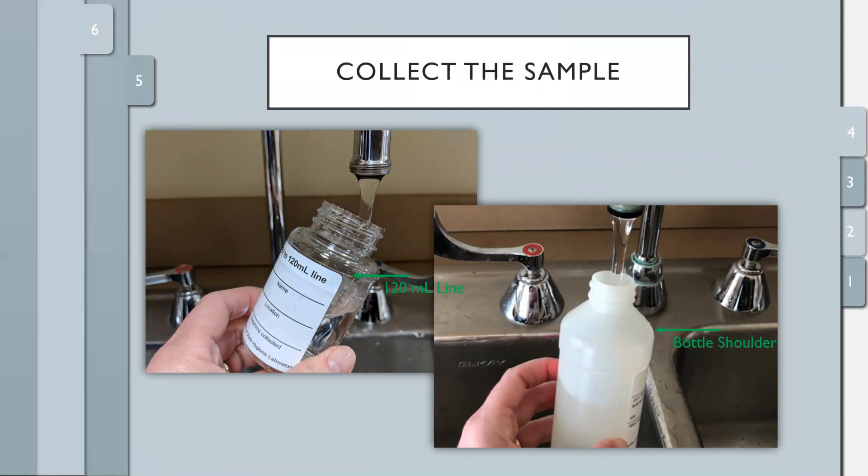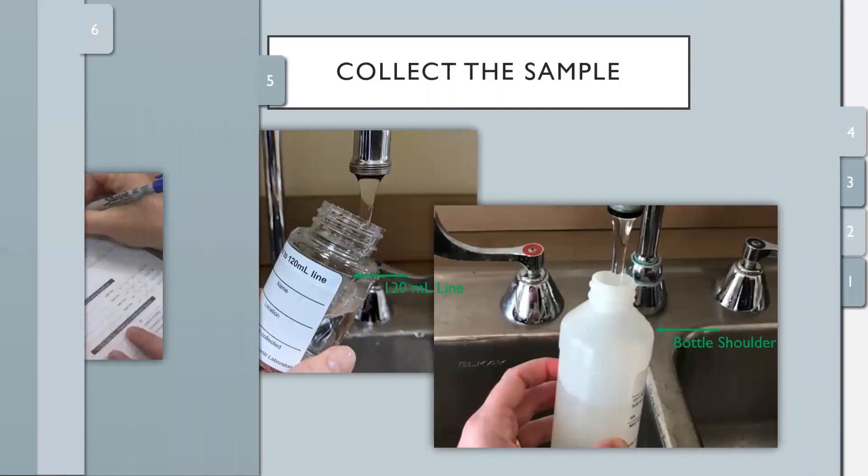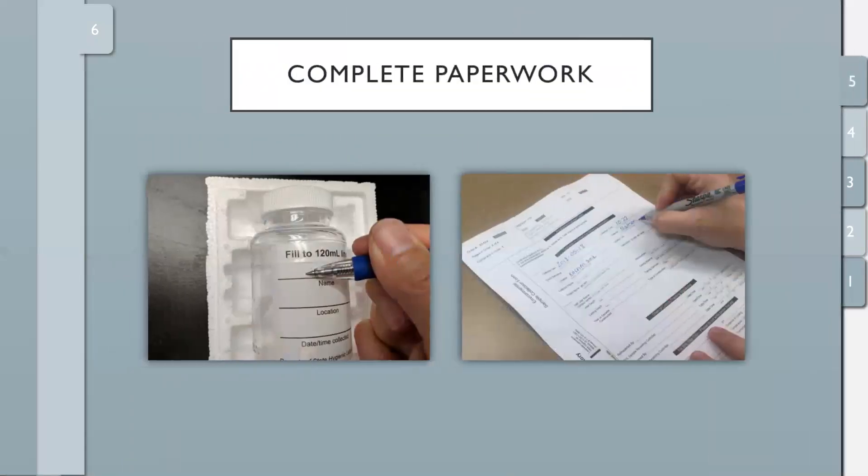When complete, screw the cap snugly back onto the bottle so it does not leak during shipping. Carefully and completely fill out the paperwork and the label on the bottle. Be thorough. Remember, this is the only information that identifies you and your sample.